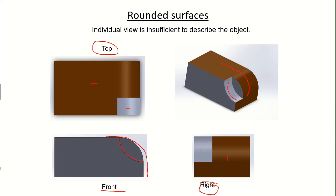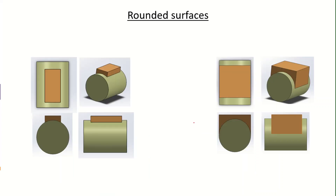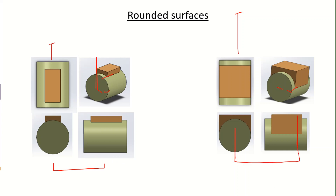Therefore, creating all required views to illustrate the solid model is extremely important. Another example shows that whether a rounded surface's extension reaches its full diameter or less than the diameter makes a complete difference in the views. The top view looks completely different depending on how much the rectangular block extends over the curved face of the cylinder. That concludes this topic on the fundamentals of engineering drawing and standard terminology. In the next video we will look at how to create the different types of views using SolidWorks.